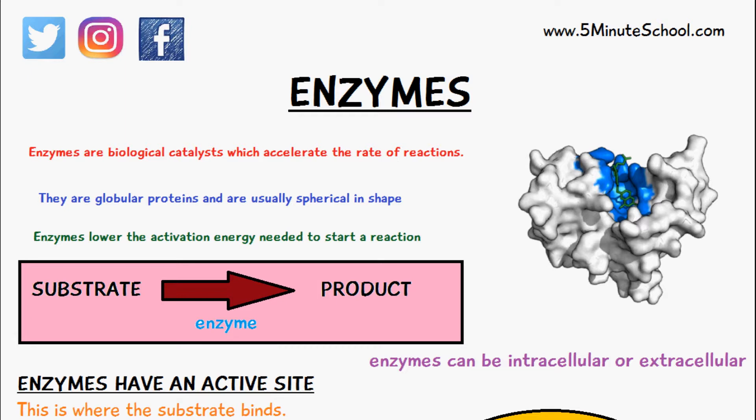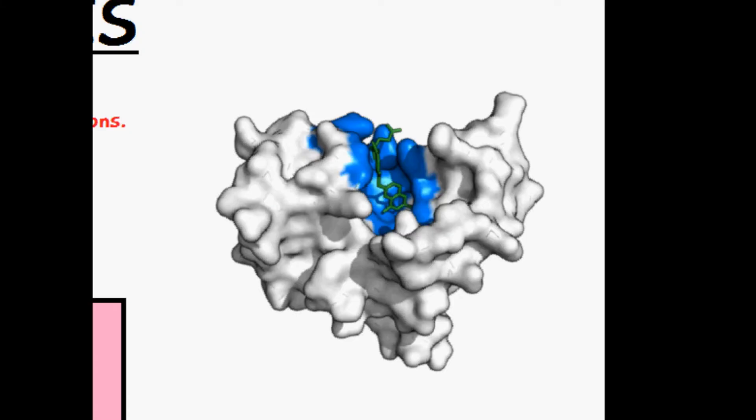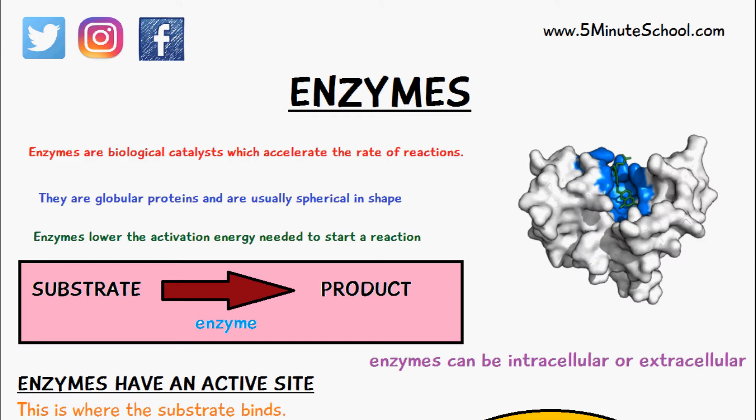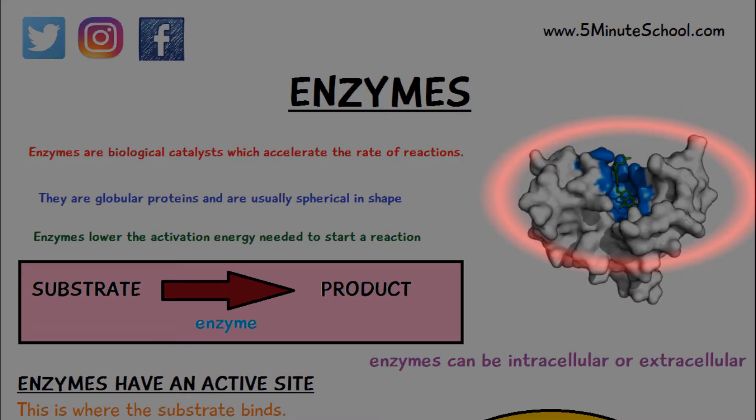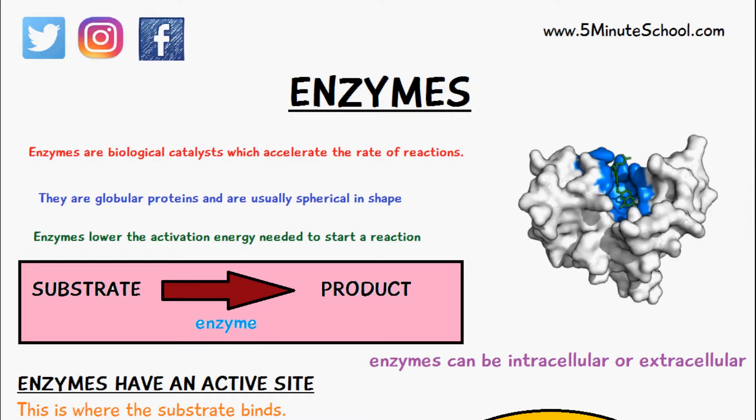This means it requires less energy for this transitional product to become the final product. So basically an enzyme just works as a middleman in converting a molecule into the final product by converting it into this transitional molecule. Here you can see on the diagram what an enzyme actually looks like. This blue region here is the active site, so this is where the substrate or the molecule will bind to first before it is converted into the transitional product, and then into the product.